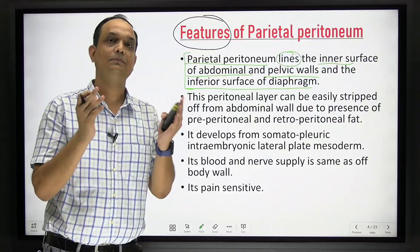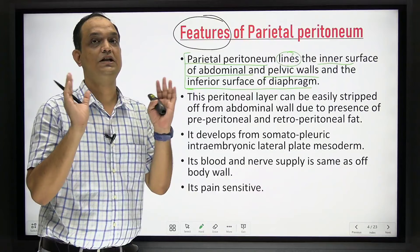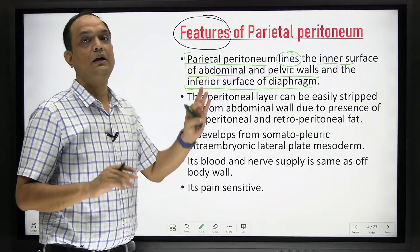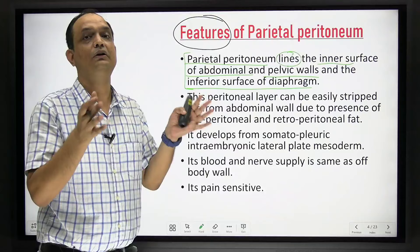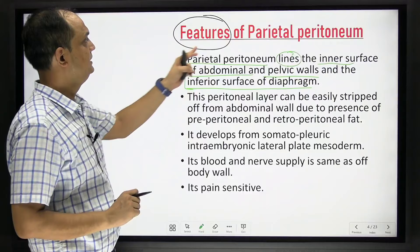The peritoneum lining the abdominal wall — whether anterior, posterior, lateral, superior, or inferior — is called parietal peritoneum. Just as parietal pleura covers the chest wall, parietal peritoneum covers the abdominal wall from all directions.